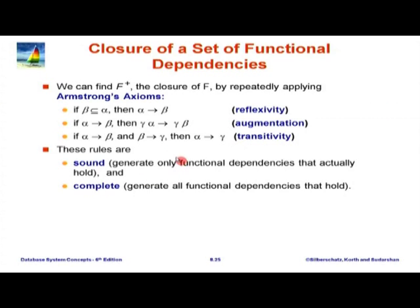Similarly, for transitivity: if two tuples have the same value of alpha, then they must have the same value of beta, and because they have the same value of beta they must have the same value of gamma. The really hard part is completeness — how do we know that just these three simple rules are enough to infer all possible things from F? It is not at all obvious, but somebody has done that work. Bottom line: since Armstrong's axioms are complete, we can use these rules repeatedly and generate all of F-plus.